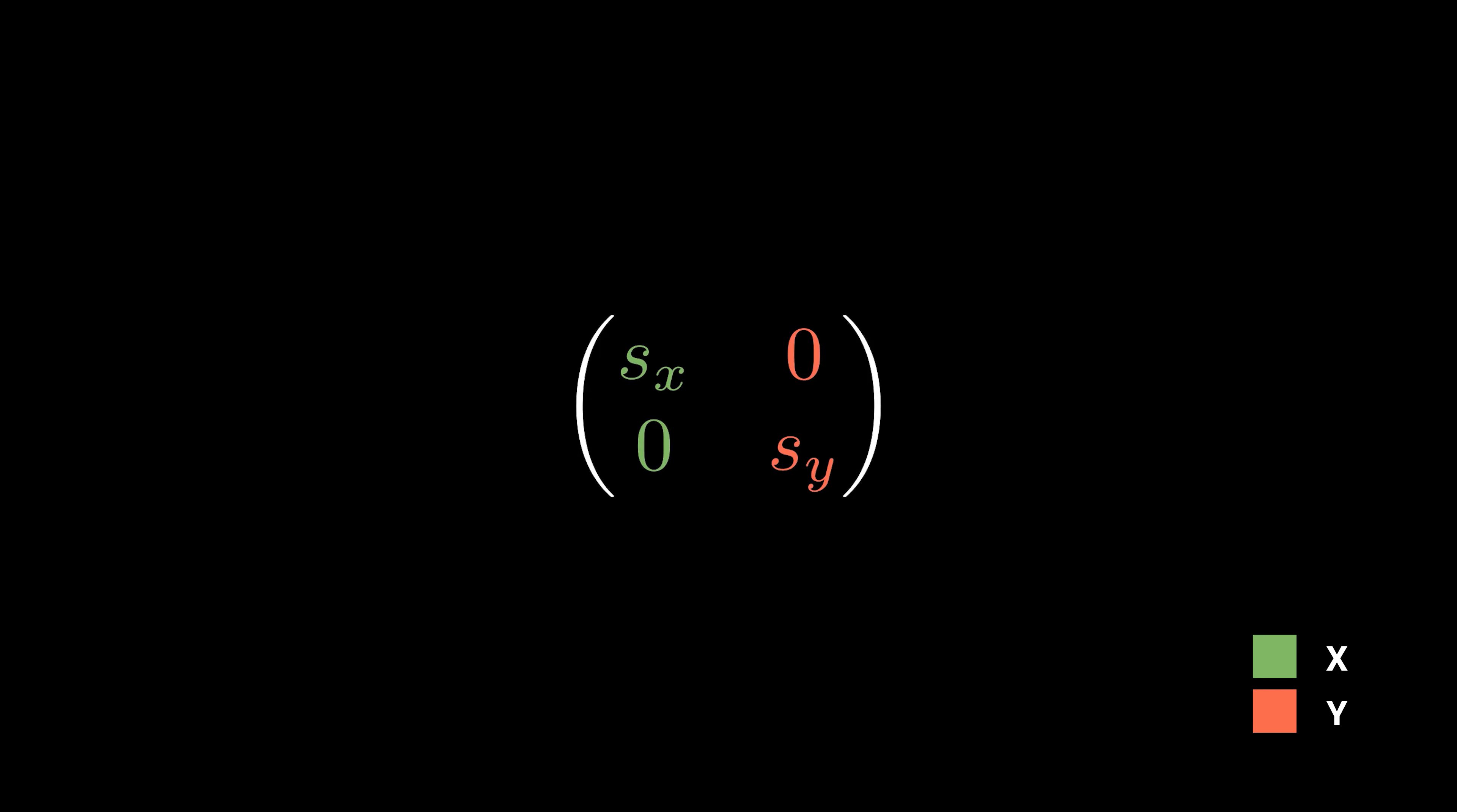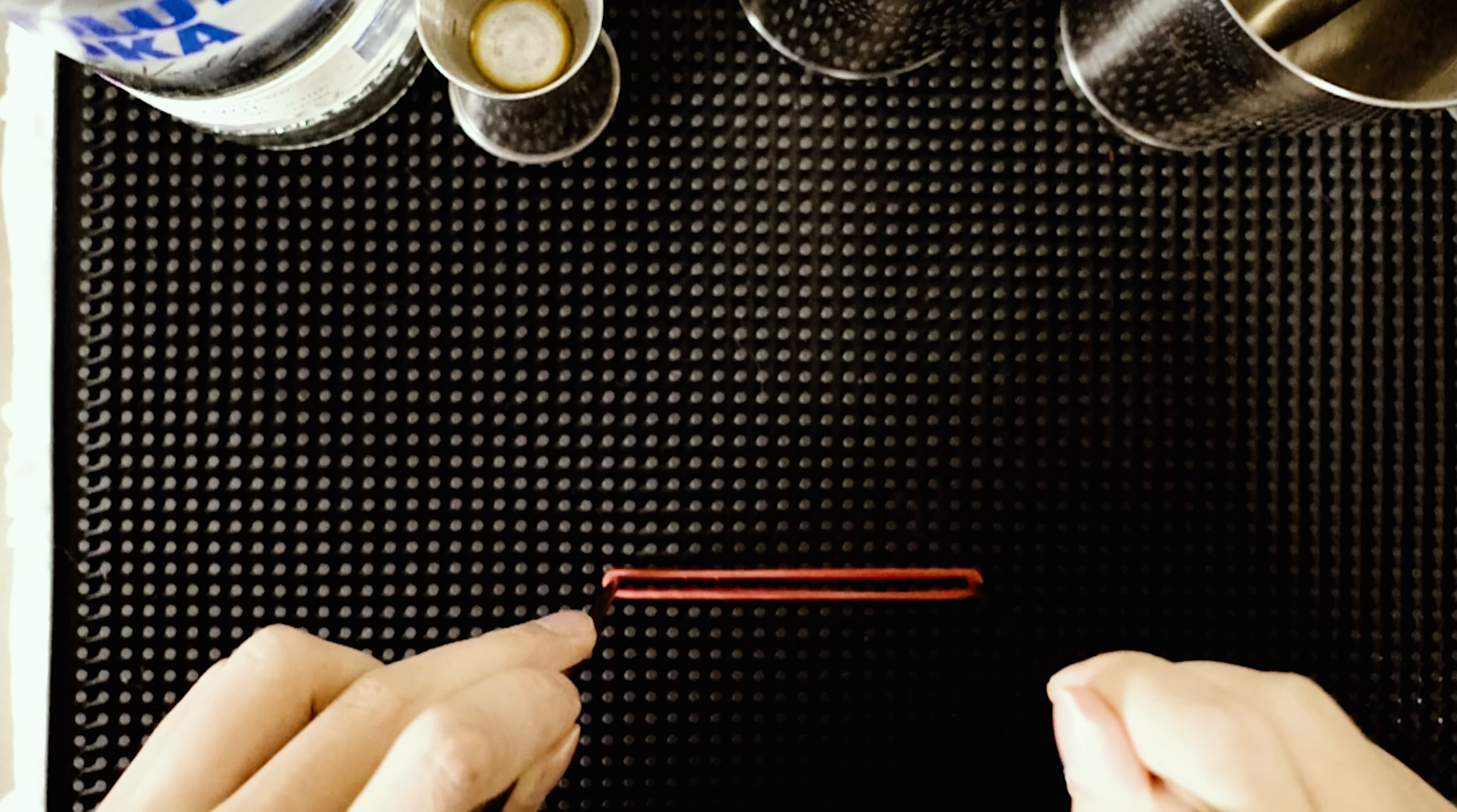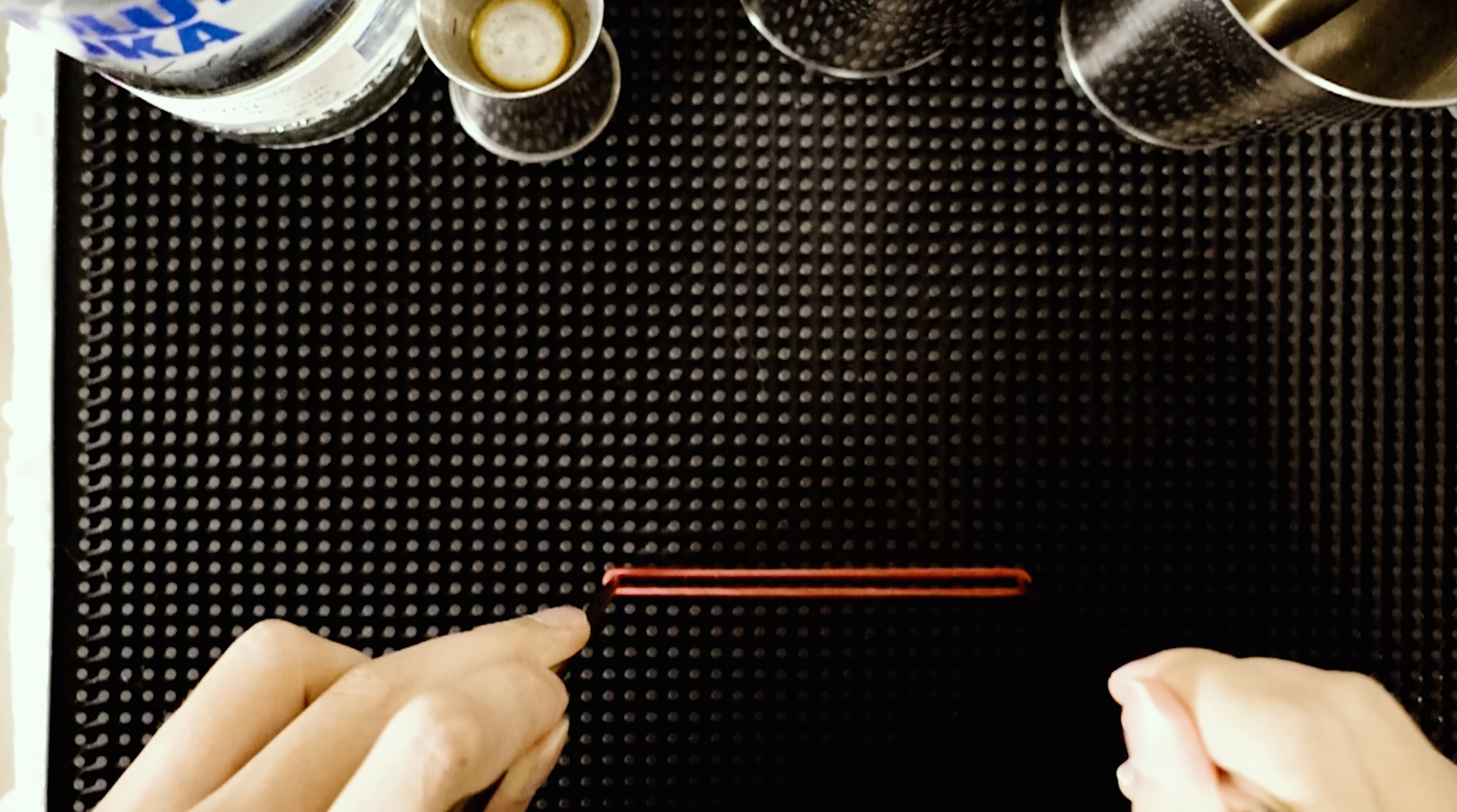This is a scaling matrix. The first column of this matrix denotes how the x-axis is stretched. The second column indicates how the y-axis is stretched. Let's take a unit square as an example.